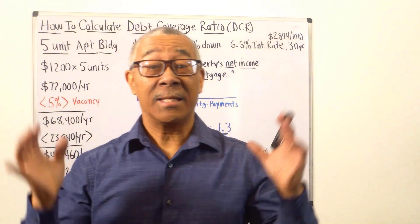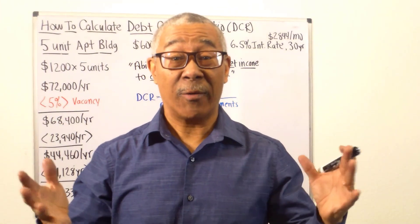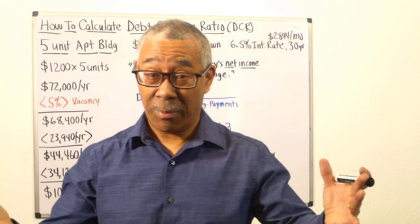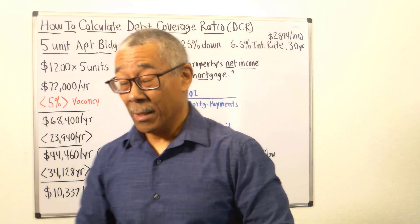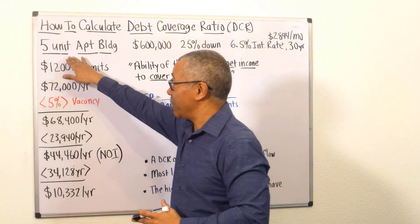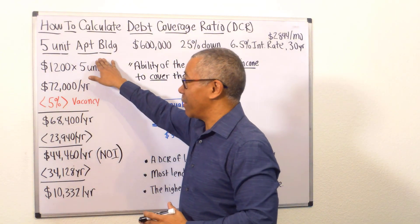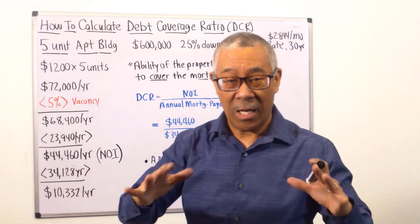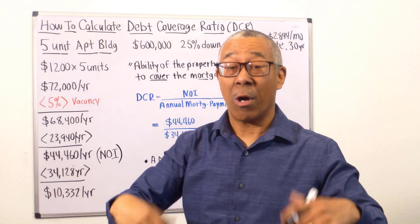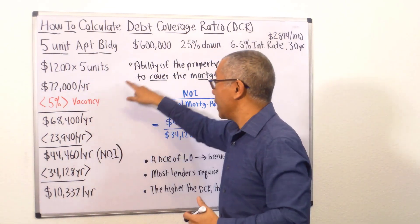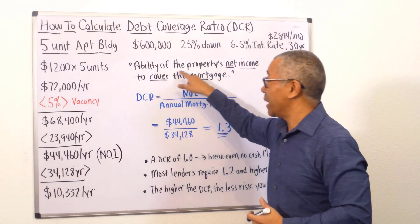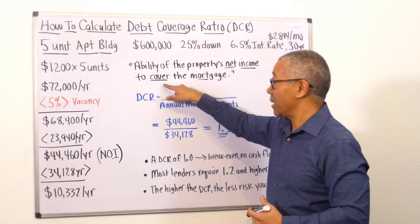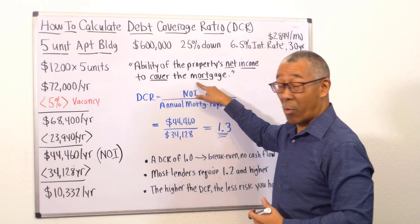How to calculate debt coverage ratio, or DCR. It's pretty simple. I'm going to use my age-old example of a five-unit apartment building. Your debt coverage ratio — DCR — is the ability of the property's net income to cover the mortgage.